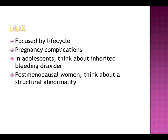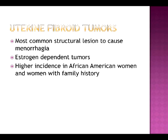Structural disorders become more common in reproductive-aged and perimenopausal women. The most common structural lesion that causes menorrhagia is a uterine fibroid. Fibroid tumors are benign growths of uterine smooth muscle cells and are estrogen-dependent tumors. The incidence of fibroids increases with age, and women are most likely to be diagnosed with fibroids when they are in their 40s. African American women and women with a family history of fibroid tumors are more commonly affected.